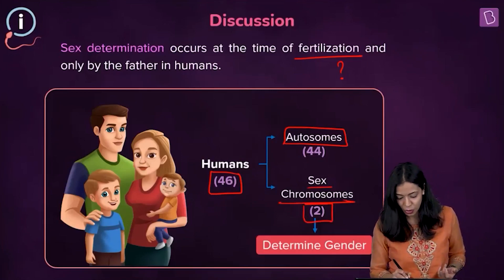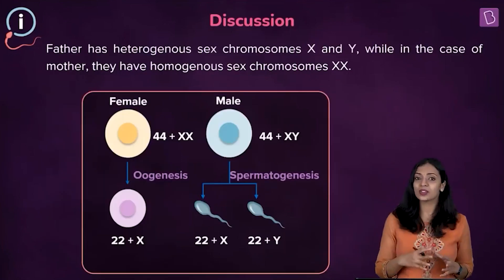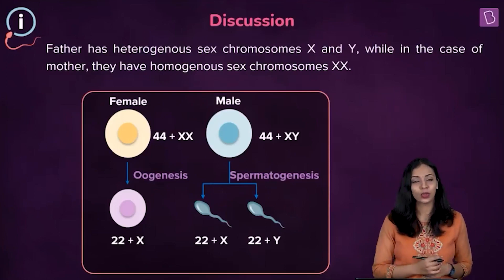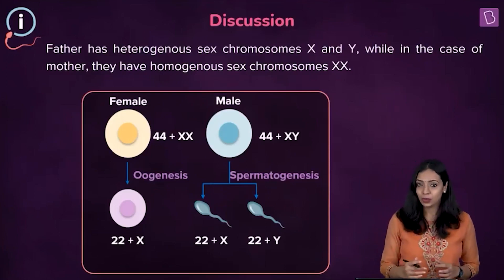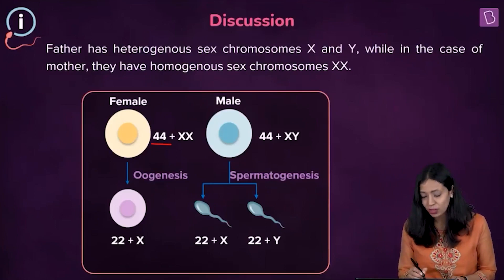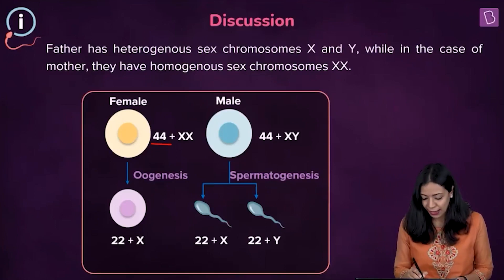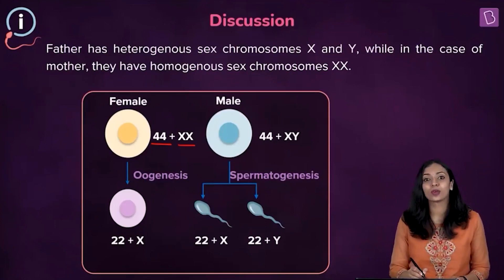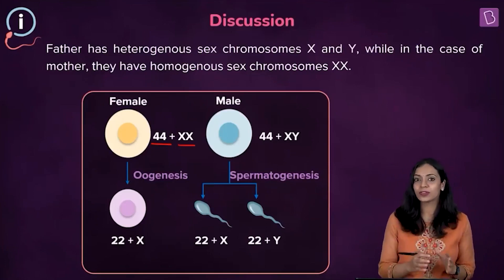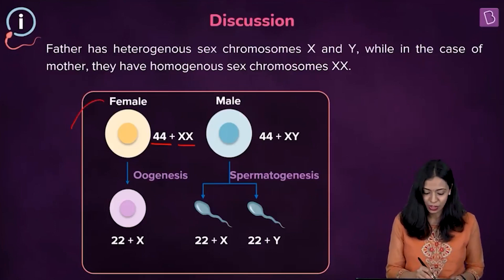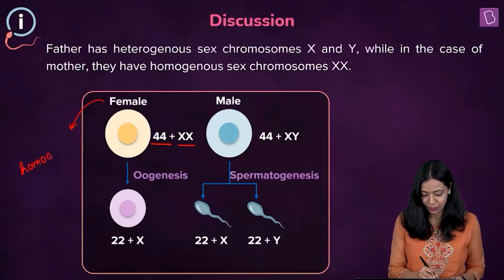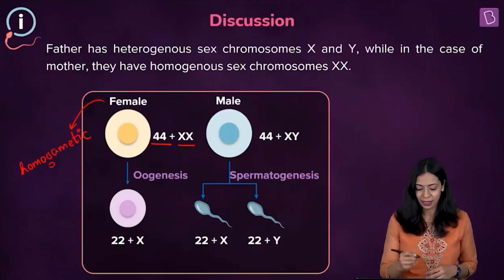It is the sex chromosomes that determine gender in humans. Females have 44 autosomes and two X chromosomes. Because of this, they can produce just one kind of gamete — they are referred to as homogametic. During gamete formation, meiosis takes place, resulting in cells with half the number of chromosomes.